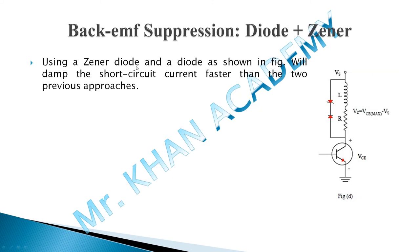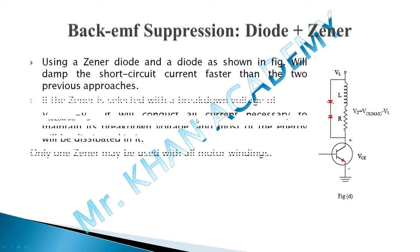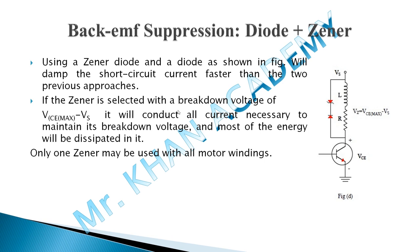The third method uses a diode plus a Zener diode. Using a Zener diode and diode together will damp the short-circuit current faster than the two previous approaches. If the Zener diode is selected with a breakdown voltage of VCE_max − VS, it will conduct all the current necessary to maintain its breakdown voltage, and most of the energy will be dissipated in it. One Zener diode may be used with all the motor windings, as we will see in the next video.